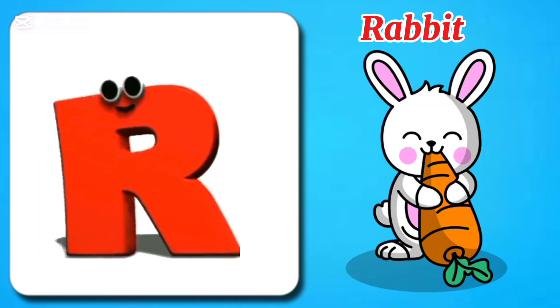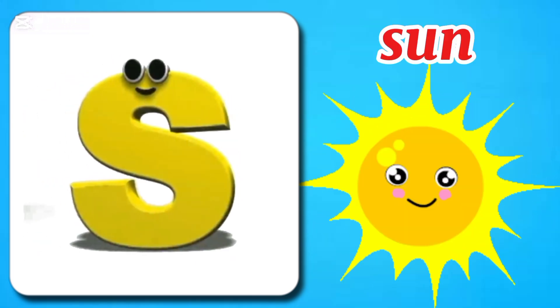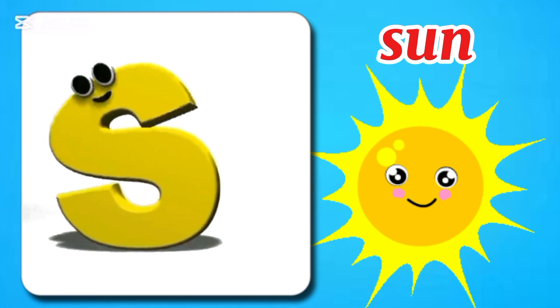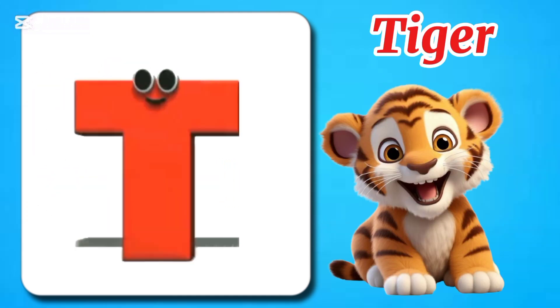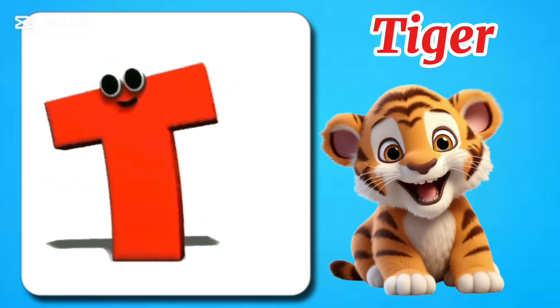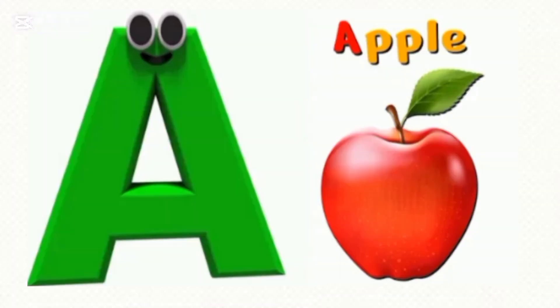R is for rabbit, rabbit, rabbit. S is for sun, sun, sun. T is for tiger, ta-tiga, ta-tiga.